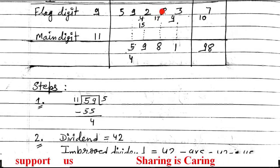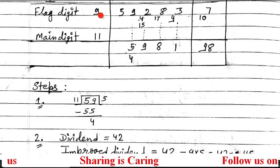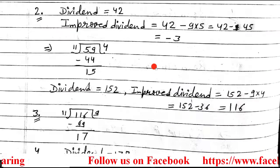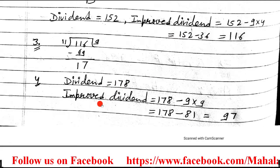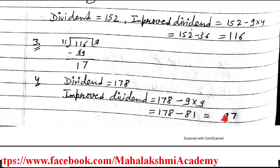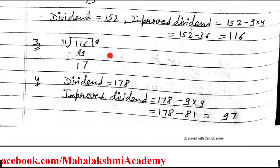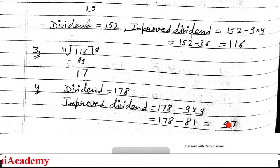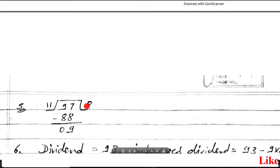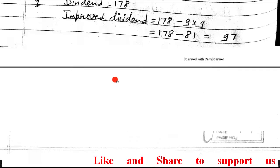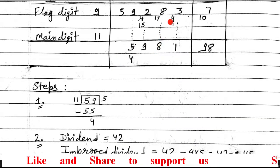Now the dividend is 178. To find the improved divider: 178 minus 9×9 = 178 minus 81 = 97. Since it is positive you do not have to reduce this, move further. This 97 is the improved divider. Divide 97 by 11: 11×8=88, remainder 9. Enter quotient 8 and remainder 9 in the table.